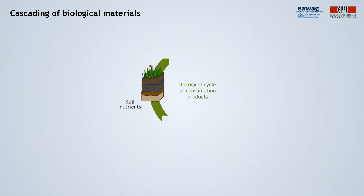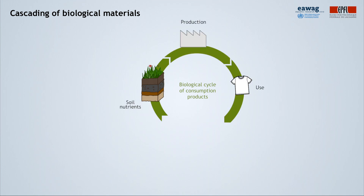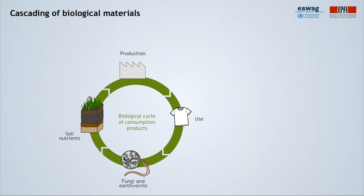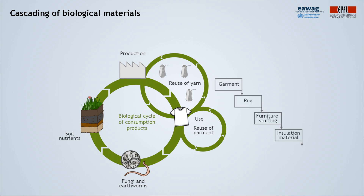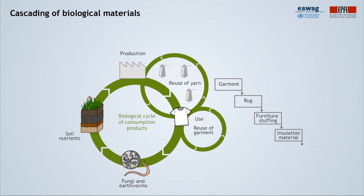Some materials lend themselves perfectly for cascading use. This is usually the case with biological materials. Wood and textiles are very good examples. Biological materials can be used in defined cascades, where the quality deteriorates from one application to the next, but both along the way and at the end, the material can be fully returned to the biological cycle with no harm to human health or the environment. At the end, they can be processed by, for example, aerobic composting or anaerobic digestion to recover resources such as organic matter, nutrients, and energy.